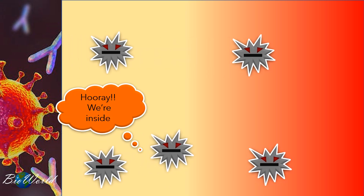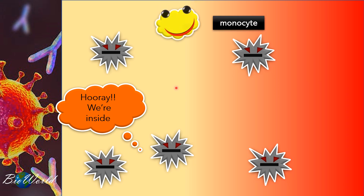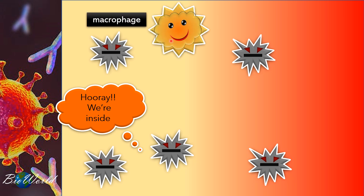Once the pathogen has entered the body, it is now free to infect body cells. It can travel throughout the body using the blood, the tissue fluid, or even the lymph. However, infection is not that simple since the body's immune system is going to react. Firstly, we have monocytes — an example of a leukocyte that will begin to differentiate into macrophage. The function of a macrophage is to carry out phagocytosis.